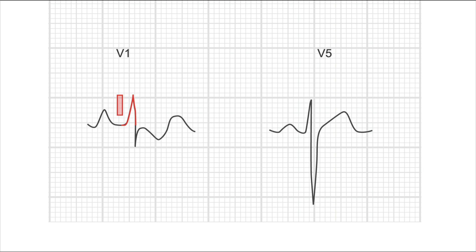1, 2, 3, 4, 5, almost 6 millimeters. That's almost 0.6 millivolts. So, RSS criteria number 1 is positive.